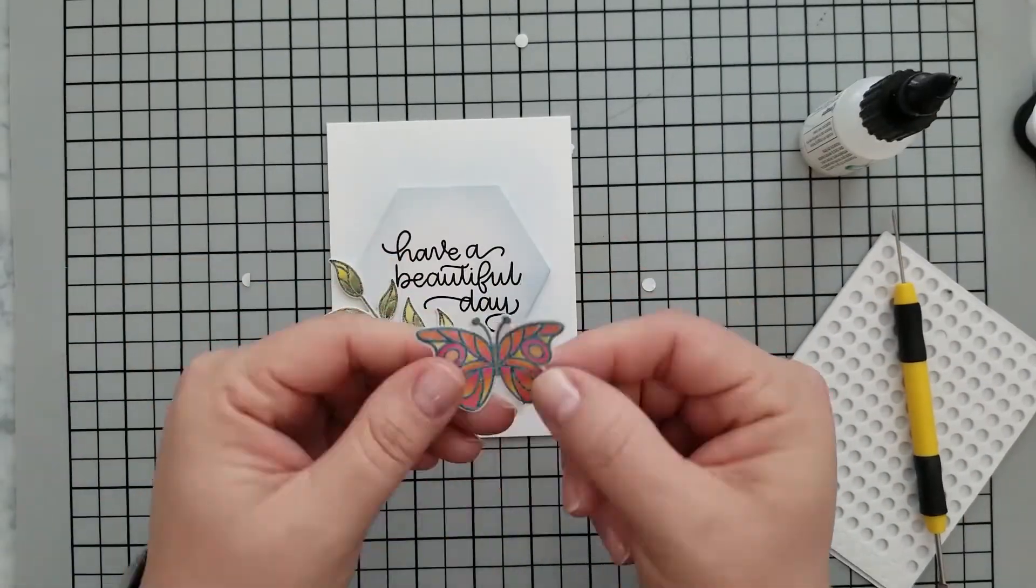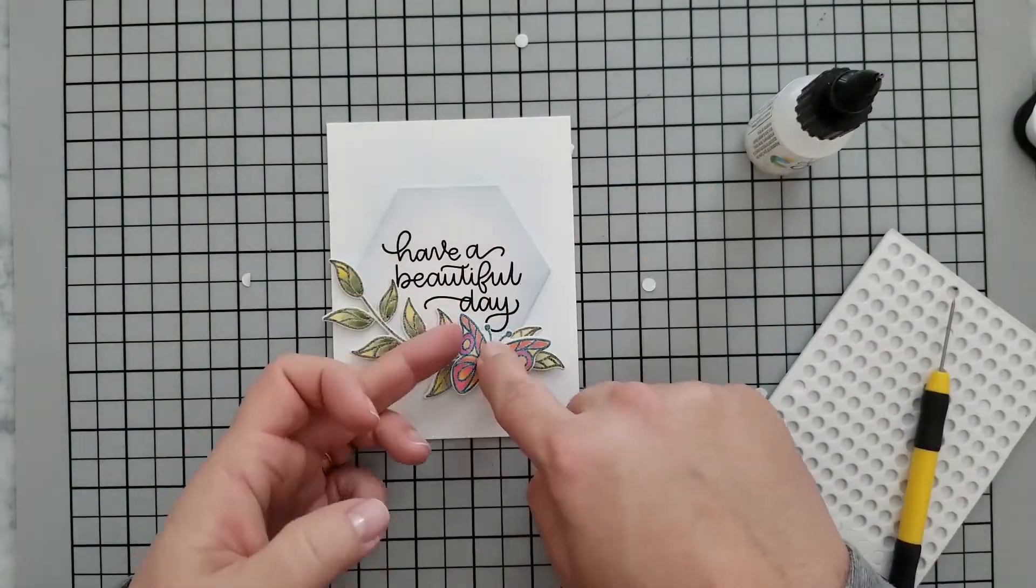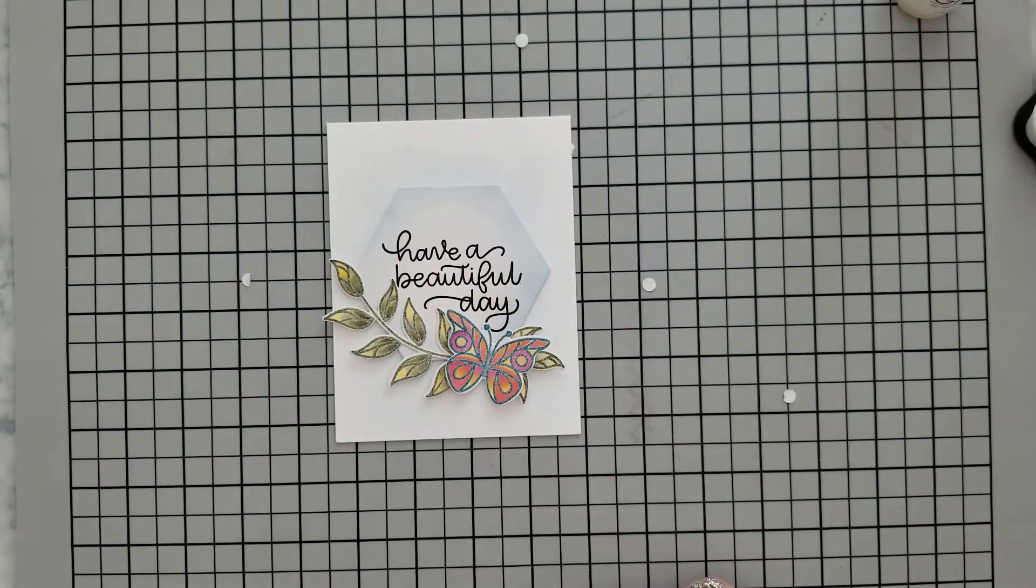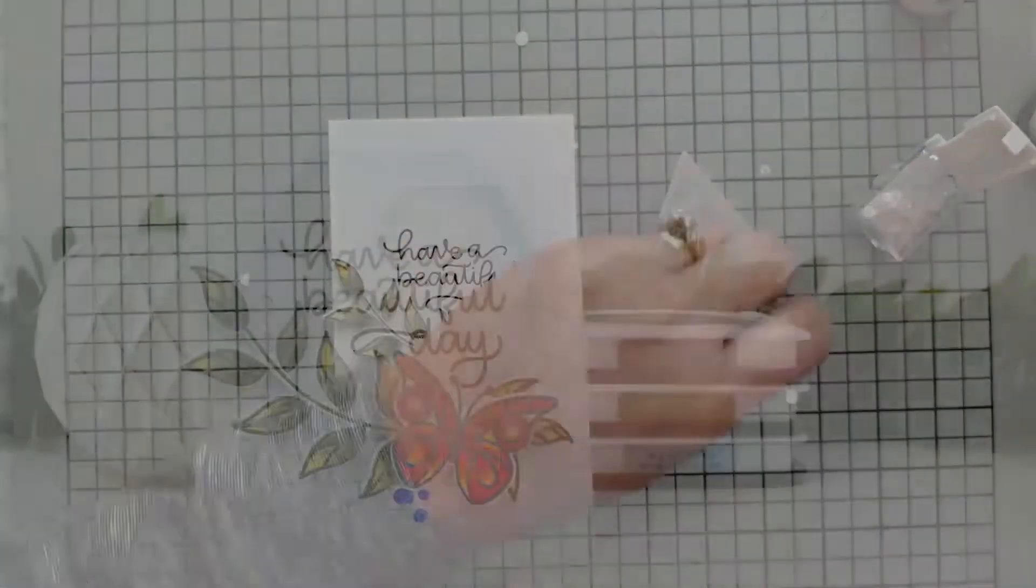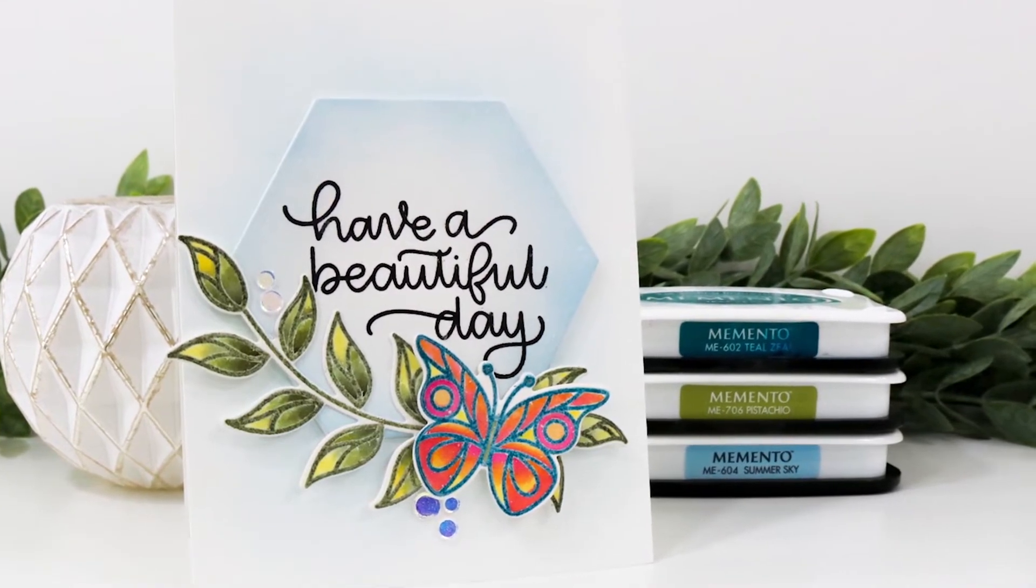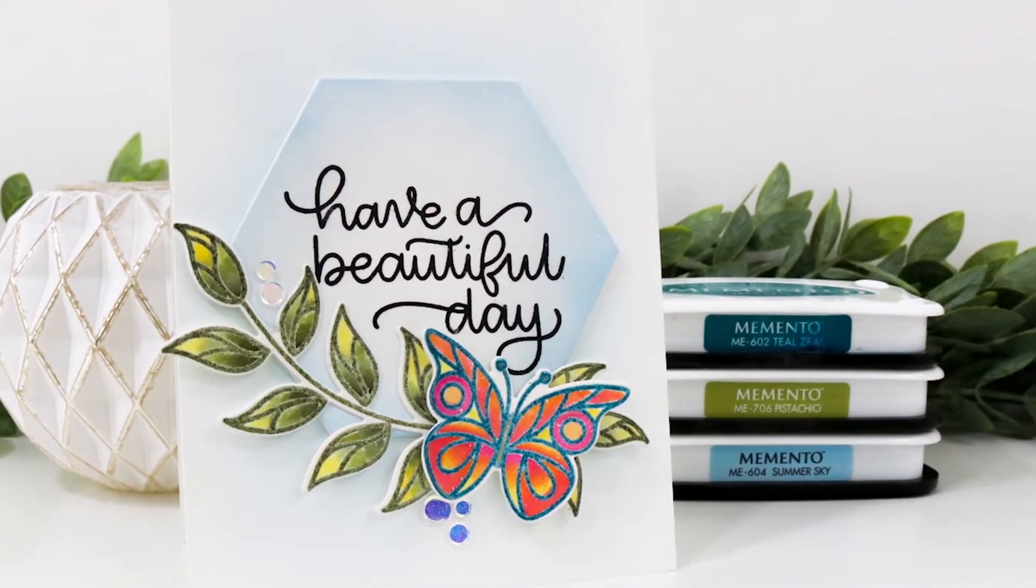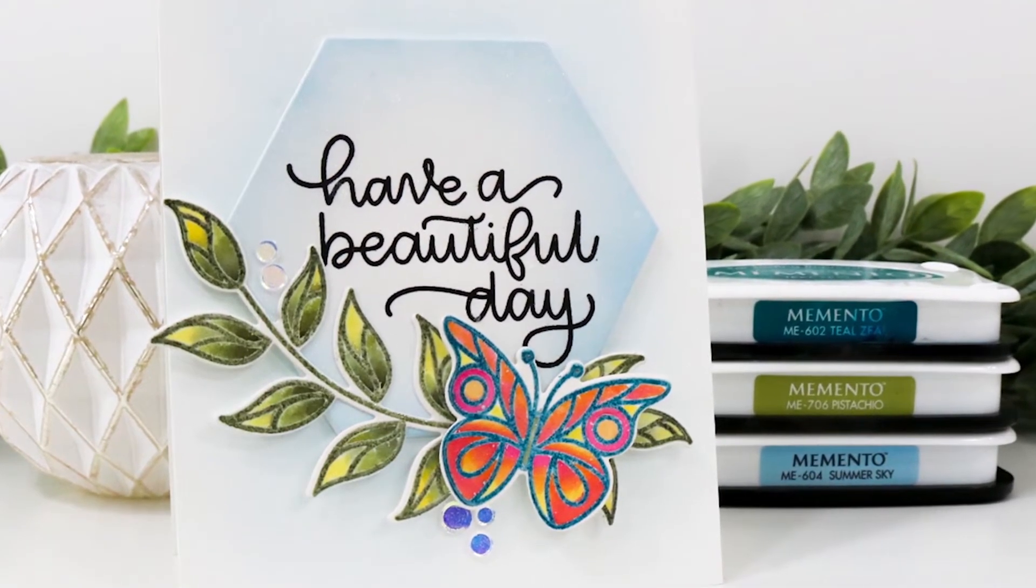Use your own point glue to center that onto the front of your card base, then arrange your leaves and butterflies however you like. Use some small round foam adhesives along with your own point glue to adhere all of this to the front of your card. Finish this off with a few sequins, or you could use enamel dots if you wanted to.